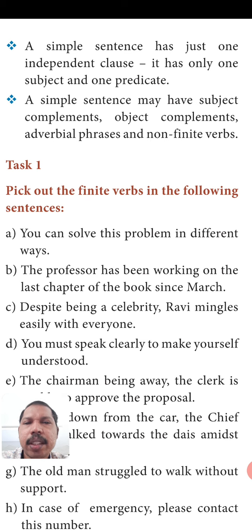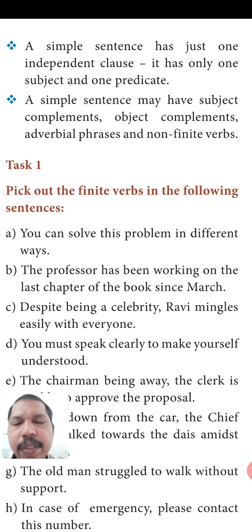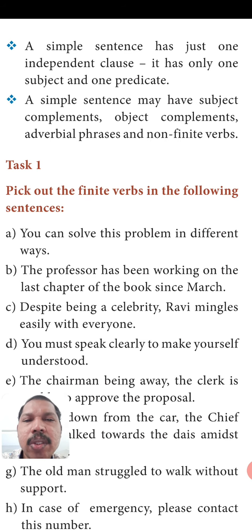A simple sentence has only one subject and one predicate — subject, verb, and other words are called predicate. A simple sentence may have subject complements, object complements, adverbial phrases, and non-finite verbs. Non-finite verbs like infinitives — to change, to like, to meet — or gerund forms like liking, changing, writing, speaking — these will be there in any sentence, whether it is simple, complex, or compound.